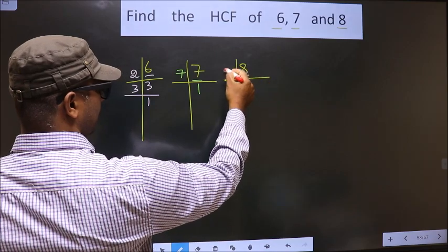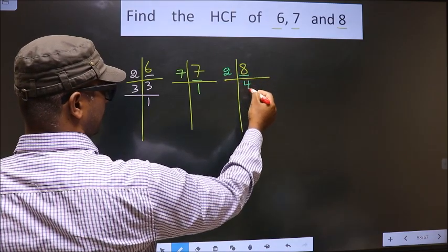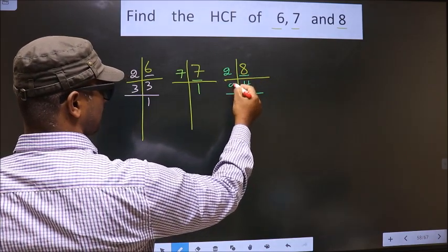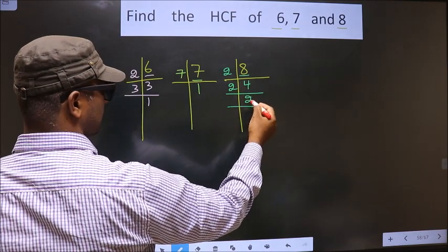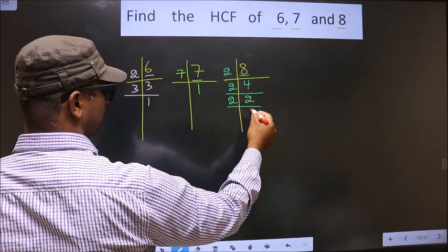Now here we have 8. 8 is nothing but 2, 4, 8. 4 is 2, 2, 4. Now 2 is a prime number so we take 2 once 2.